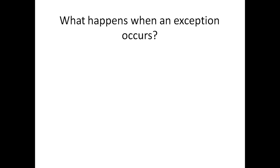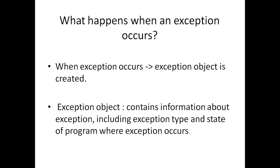So what happens when an exception occurs? Whenever an exception occurs, an exception object is created. What does the exception object hold? The exception object contains information about the exception. It includes exception type and state of the program where the exception occurs.